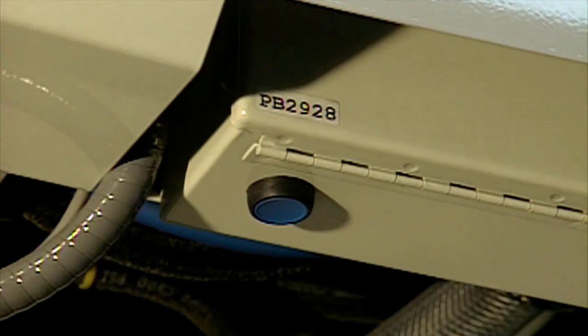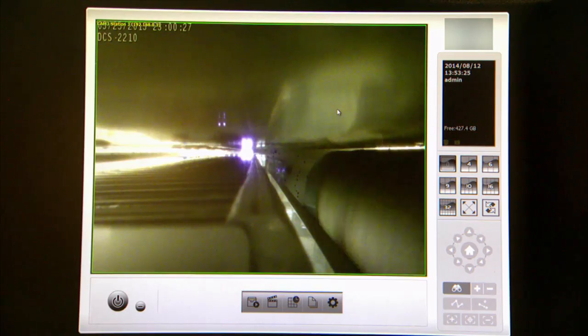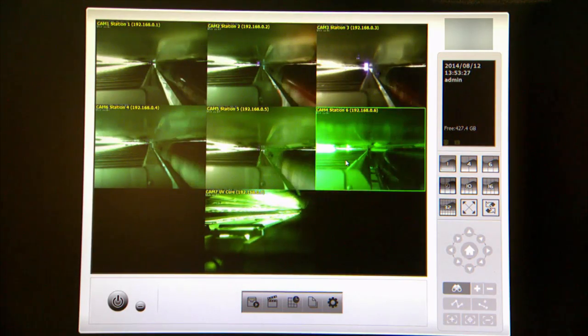allowing the operator to restart the dryers from the console rather than having to open or enter each print station and manually reset the dryers, resulting in considerable time saving. The visual dryer inspection monitoring system can view up to as many as 16 dryer and UV curing stations.